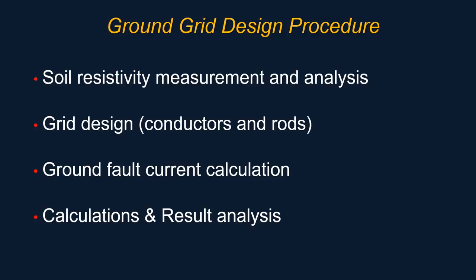The ground grid design procedure: first, soil resistivity measurements and analysis — we're going to go over how that is captured in the field, recorded, and brought back to the office and entered into the modeling tool such as ground grid systems. Then grid design — conductors and rods — how to assign monetary value and the type of material for the conductors as well as the rods. Ground fault current calculations: we'll go over how to take the single line to ground value from the short circuit study report. And calculations and results analysis — essentially the output report that you would hand over with your deliverables.